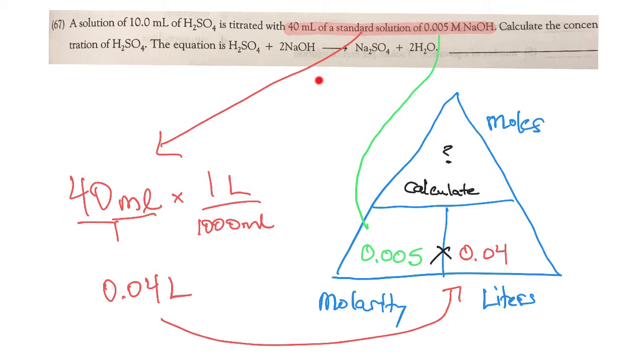You'll see the arrow here showing that I'm converting the 40 milliliters into liters because we have to have it in liters to figure out the moles. So one liter is a thousand milliliters. If I simplify that, we get 0.04 liters.